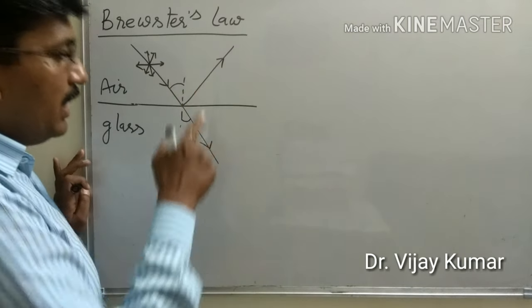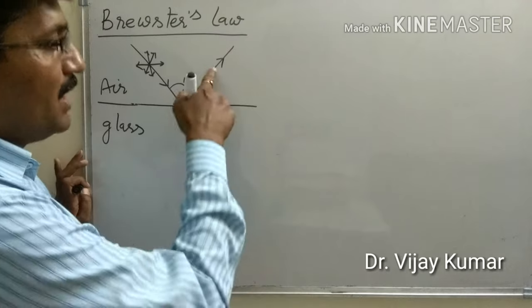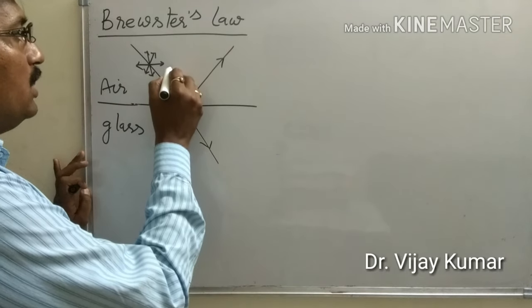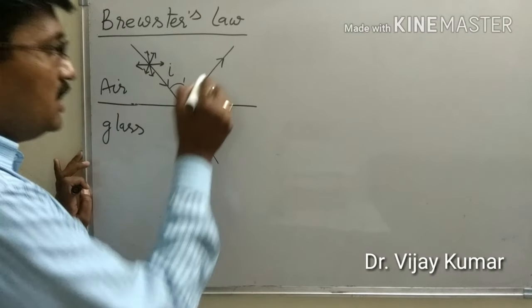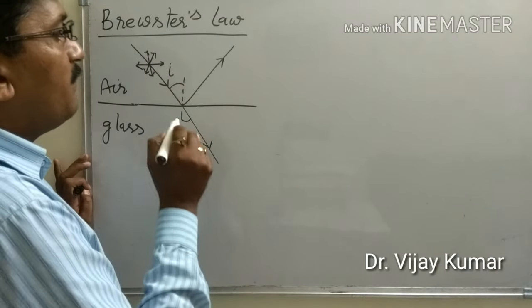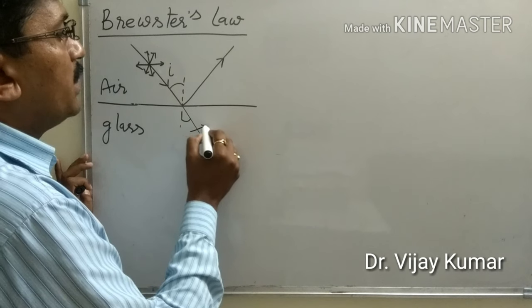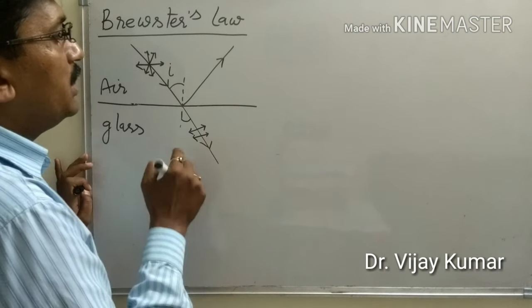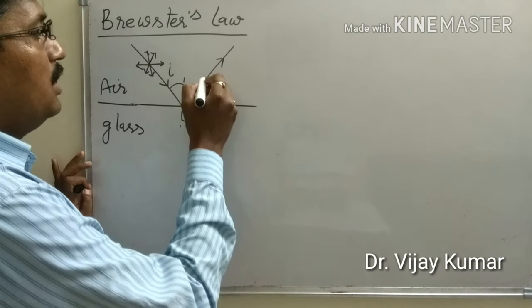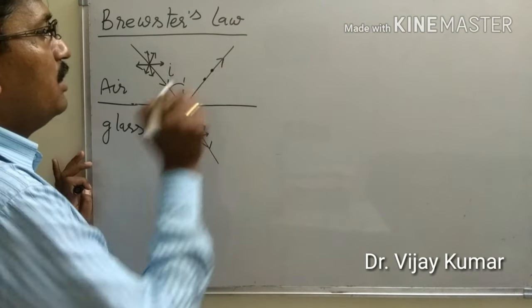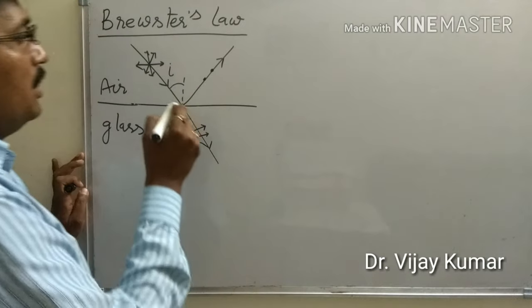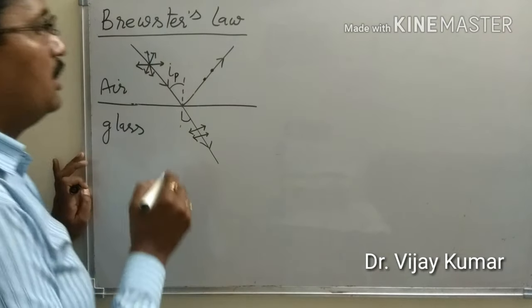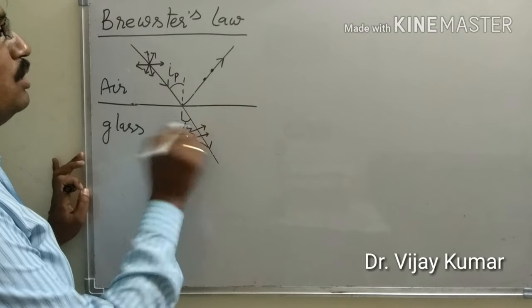But for a particular angle of incidence, these two rays are perfectly polarized and components of this ray are parallel to the plane and components of this ray are perpendicular to the plane. And this angle is known as angle of polarization and this is angle of reflection.